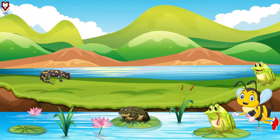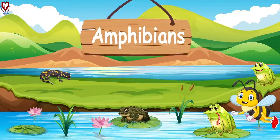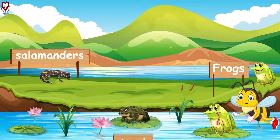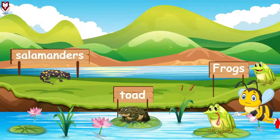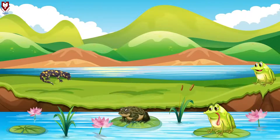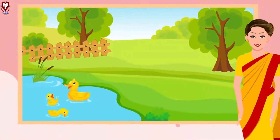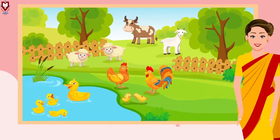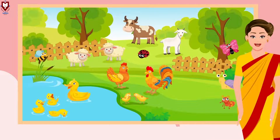There are also some animals that live both on water and land — they are called amphibians. Frogs, salamanders, and toads are some amphibians. So animals come in different shapes and sizes and live in different habitats. They make our world colorful, so we should take care of them in our own way.